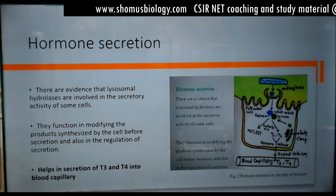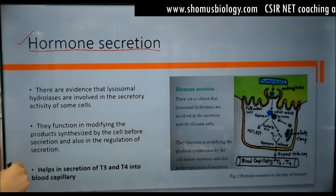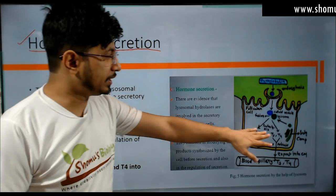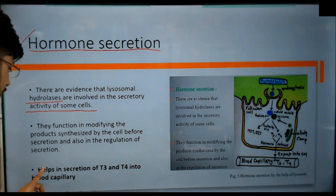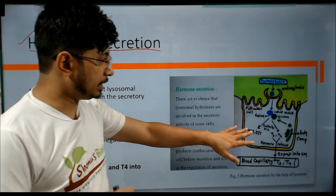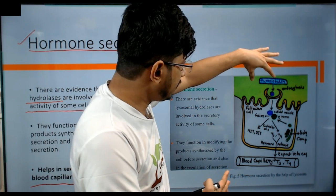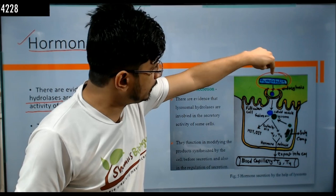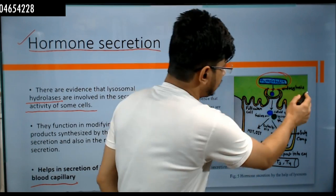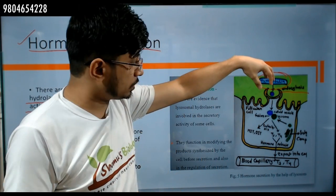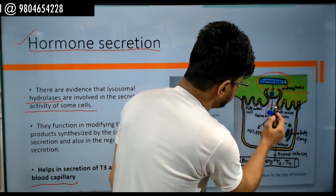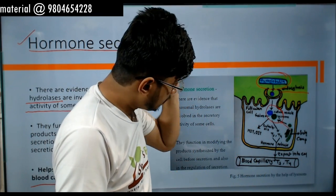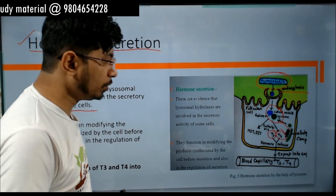Autophagy is when the lysosome releases all its enzymes to destroy the cell itself, using autophagosomes. Regarding hormonal secretion, there is evidence that lysosomal hydrolases are involved in the secretory activity of some hormones — specifically T3 and T4 thyroid hormones secreted into blood capillaries. Thyroglobulin is the signaling molecule; upon binding, thyroglobulin is endocytosed, and the resulting vesicle fuses with the lysosome, triggering release of T3 and T4 into the blood capillary.